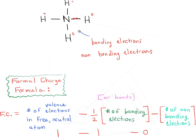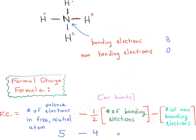Now let's look at the nitrogen. The hydrogens are all neutral, but how many bonding electrons does nitrogen have? It has four bonds, and each bond has a pair of electrons, so that's a total of eight bonding electrons. It has no non-bonding electrons — no lone pairs. Because it's nitrogen, it has five valence electrons in a free neutral atom. One half times eight bonding electrons gives us four.